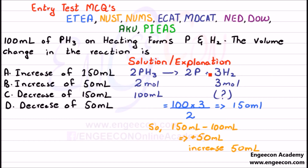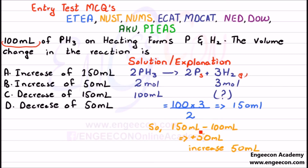First, write a balanced chemical equation. In this case phosphorus is solid and hydrogen is a gas. It is clear that 2 moles of PH₃ produce 3 moles of hydrogen gas. So 100 ml of PH₃ produces — cross multiplying — 150 ml of hydrogen.